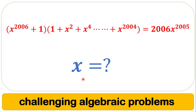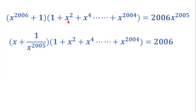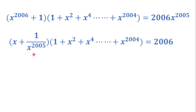In the first step, I want to divide both sides of this equation by x^2005. Notice that x = 0 is not one of the answers, because if we replace x by zero in this equation we get 1 = 0, which is not correct. So zero is not one of the answers, and we can divide both sides by x^2005.